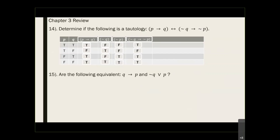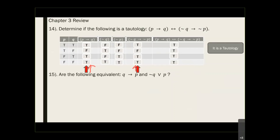Now I have my first parenthesis column and my second parenthesis column. For the biconditional, as long as they have the same value the result is true. As you can see, both columns are the same in every row, so all values are true — meaning this is a tautology. If it's all true it's a tautology; if it's all false it's a contradiction.